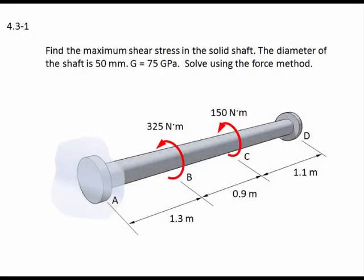Problem 4.3-1. Find the maximum shear stress in the solid shaft. The diameter of the shaft is 50 millimeters. The shear modulus, G, is 75 gigapascals. Solve using the force method.